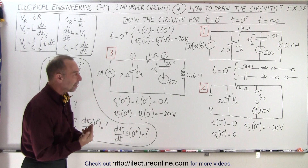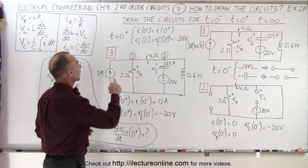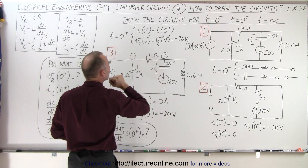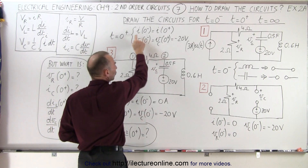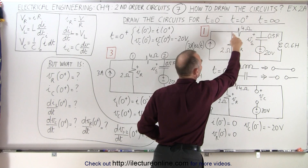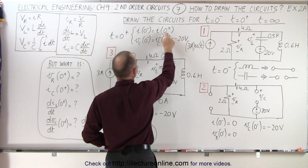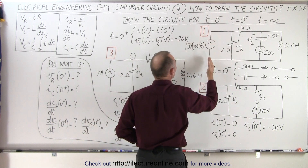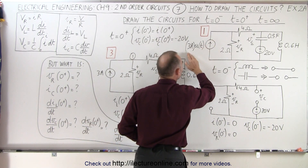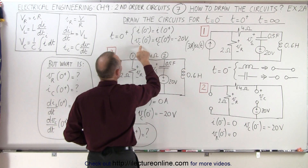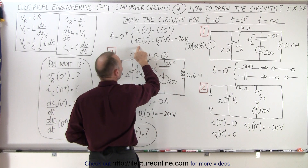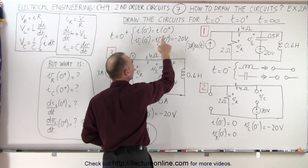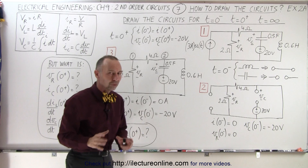Now we allow the event to happen at time equals zero, so at that point we're going to draw the circuit again at time equals zero plus, right after the event happened. We can say that the current through the inductor and through the resistor will be the same right after the event as it was before. In this branch we probably have a three amp current. The voltage across the capacitor is going to be the same right after the event as right before, so it's going to be minus 20 volts as well.